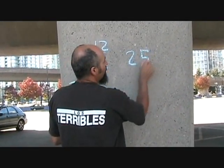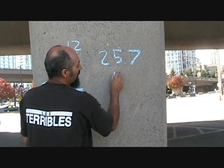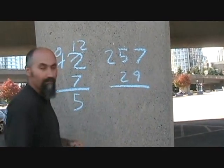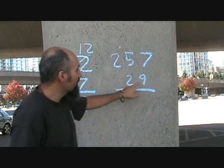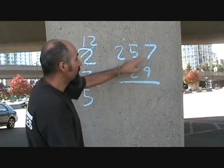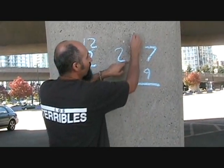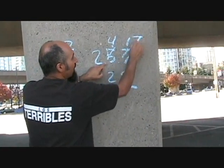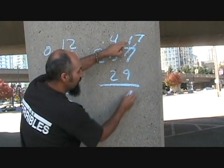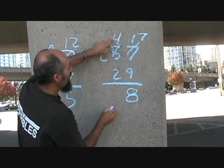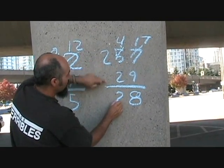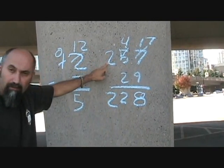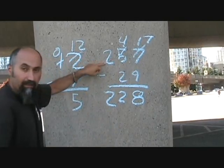So if you have 257 minus 29, what you do is you can't take 9 away from 7, so you're going to borrow 1 from the 5. So that becomes 4, this becomes 17. 17 minus 9 is 8. 4 minus 2 is 2, and there's nothing to subtract here, so that becomes 2. That's subtracting.